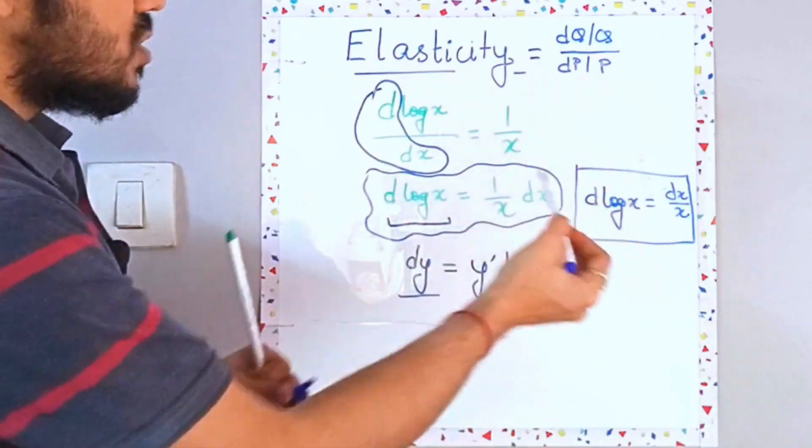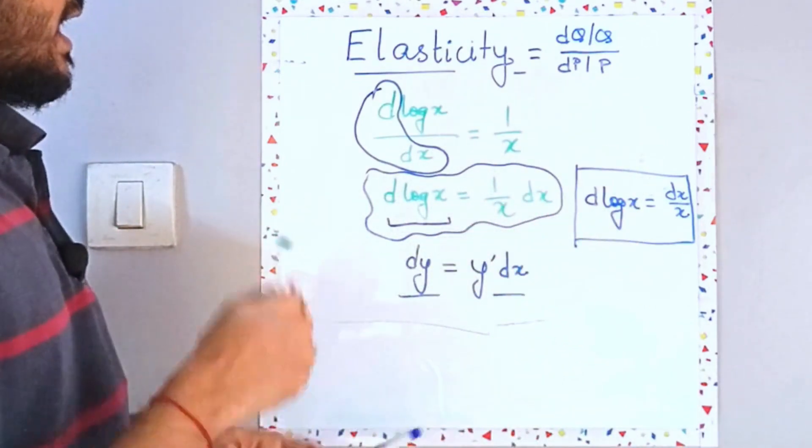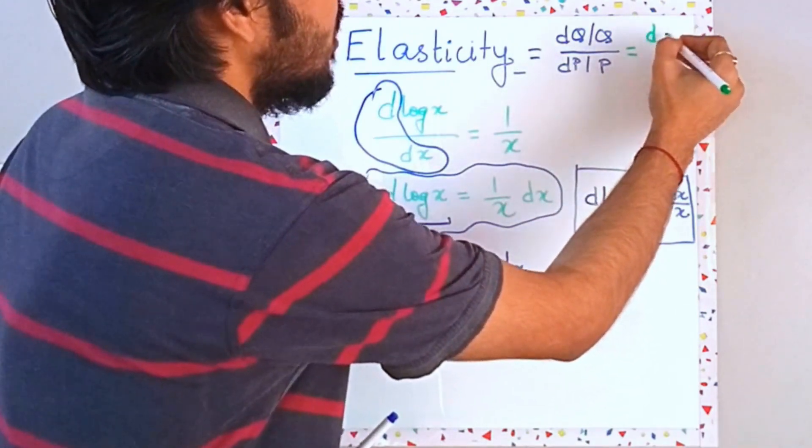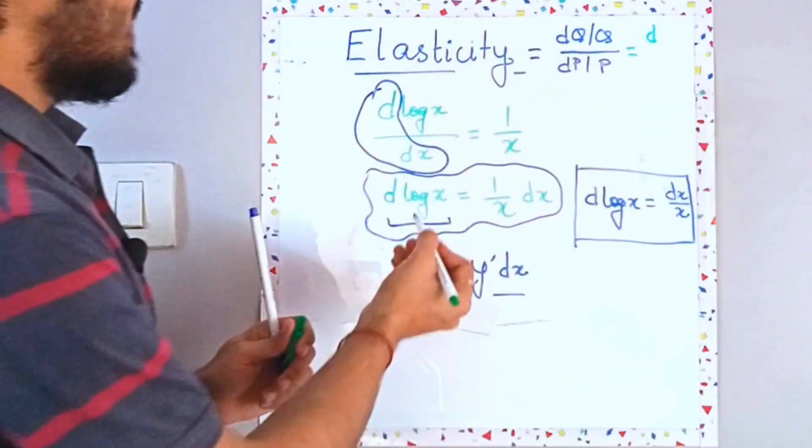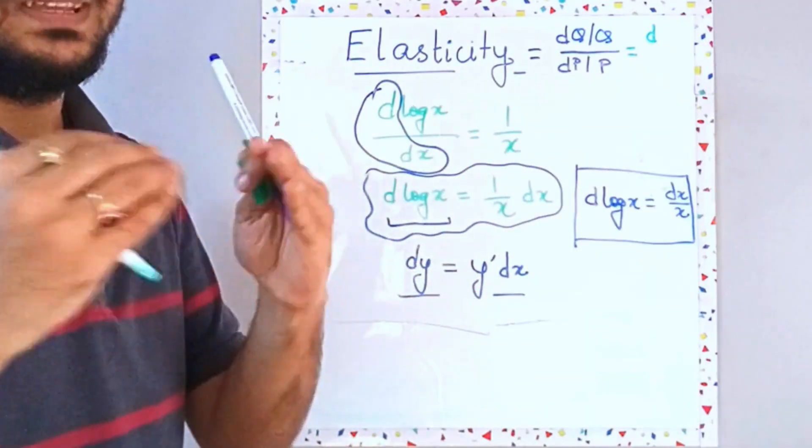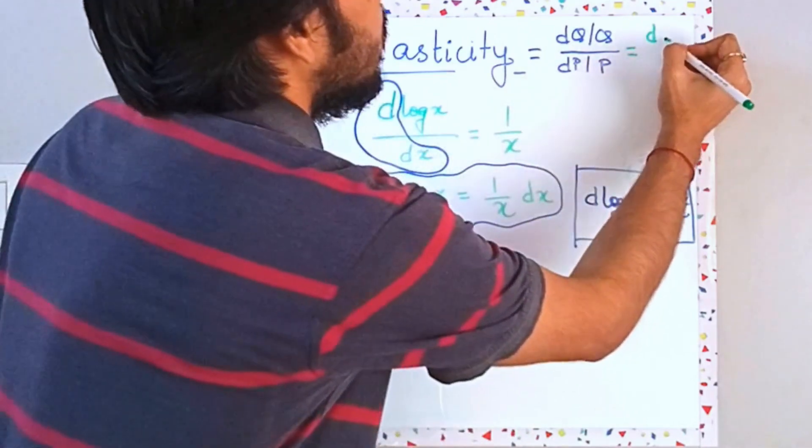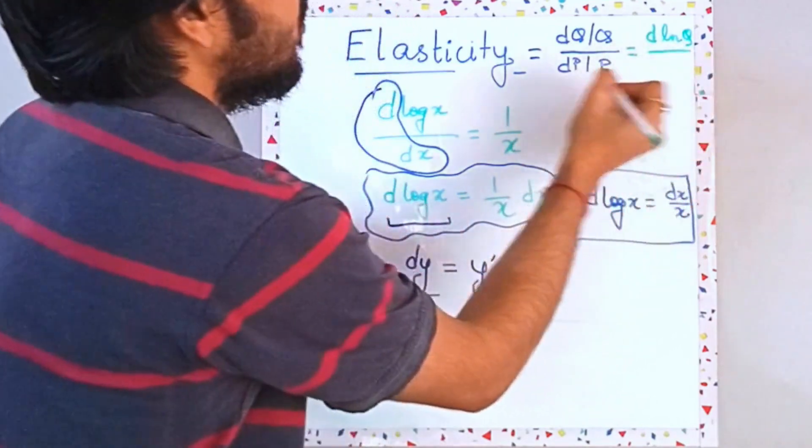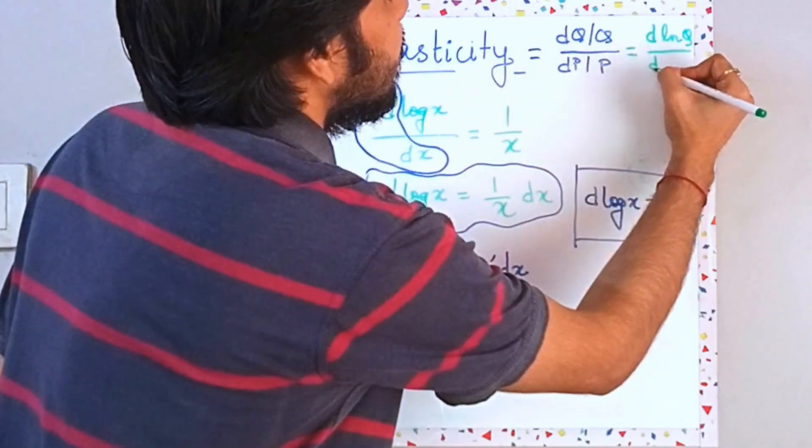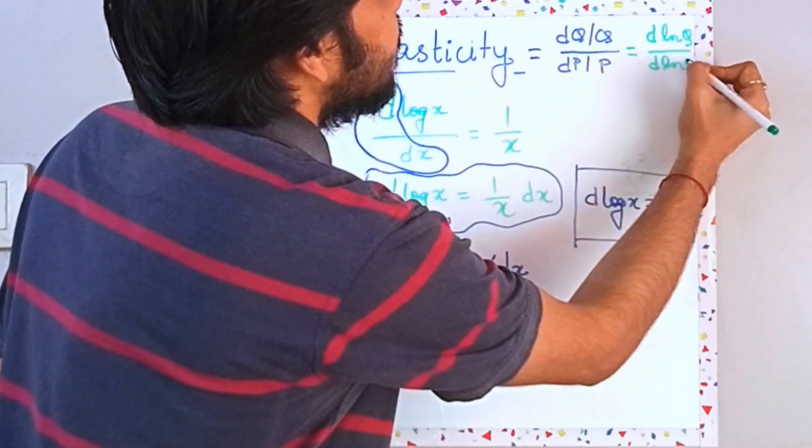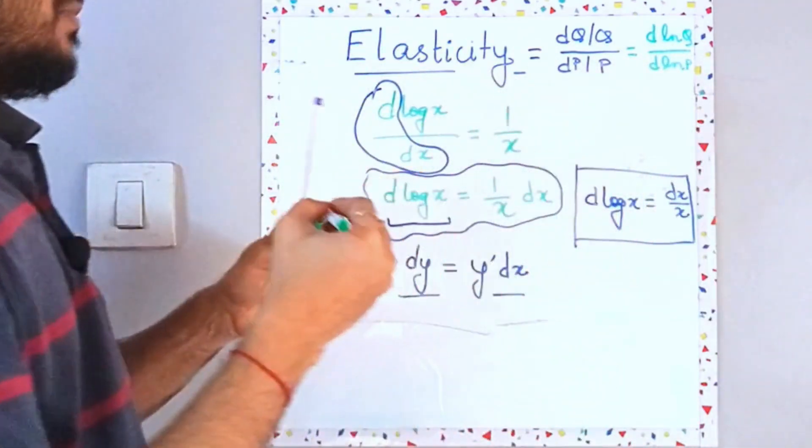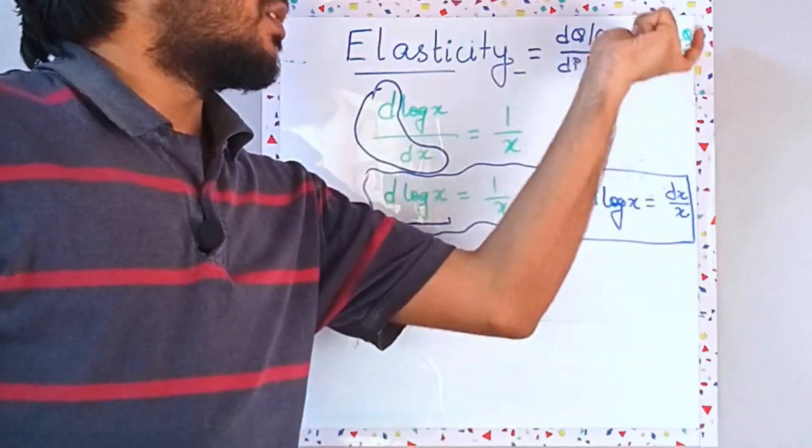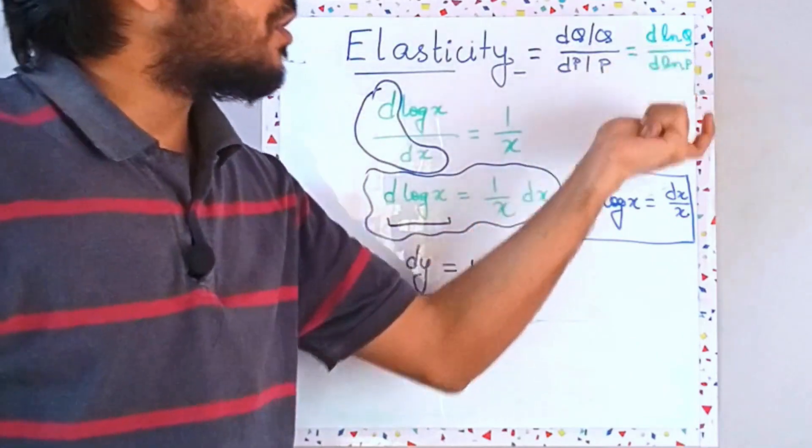Now I can safely use this formulae and write in place of DQ upon Q as D log or ln. I will simply write ln. Over here when I say log I meant log the base e or ln. So this is ln. So D of ln Q and similarly I can write over here as D of ln P. Elasticity is simply the ratio of differential of the logarithm of Q and differential of the logarithm of P.